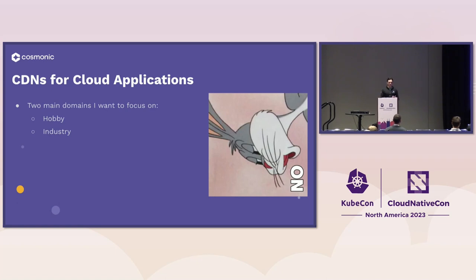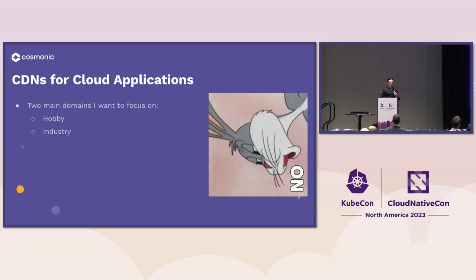The two main domains I want to focus on: the hobby application — something I write in my free time providing a fun little web app — where it's not performance critical and doesn't need to be distributed for the use case, but I want to distribute it so it can be close to the user. The other domain is what I'm vaguely calling the industry application: something that has hard requirements for heterogeneous environments where it's difficult to deploy with Kubernetes, requiring manual management, and doesn't fit in a cloud-native ecosystem when I think it really could.